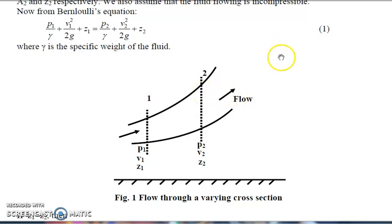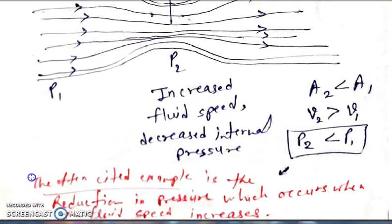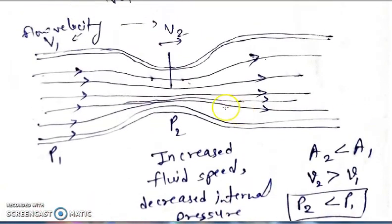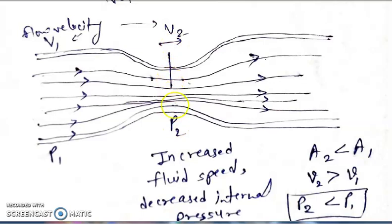Yesterday we studied Bernoulli's equation. According to Bernoulli's equation, the total energy per unit volume before the obstruction is equal to the total energy per unit volume after the obstruction. If there is an obstruction at the center, the flow velocity is V1, pressure is P1, and area is A1 here. At the obstruction point, V2 is the velocity, P2 is the pressure, and area is A2.